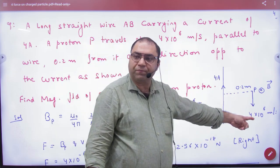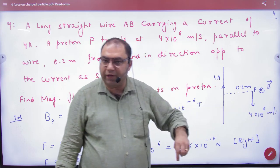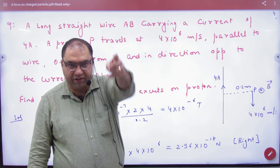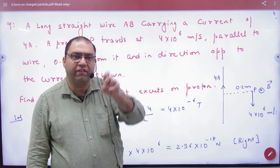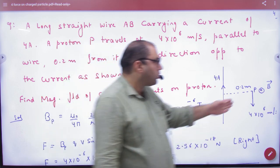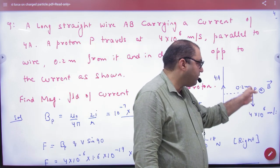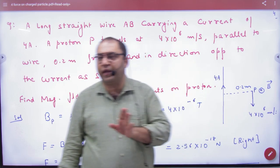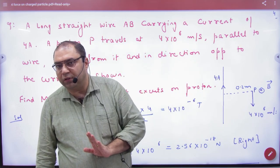Now this charged particle is moving with velocity V in the magnetic field, it will experience a force. The value will be F = QvBsin90°. Why? Because B vector is into the board, velocity vector is this, so the angle is 90°.